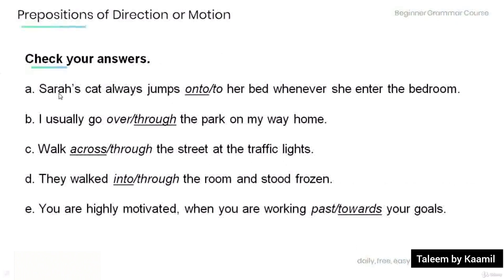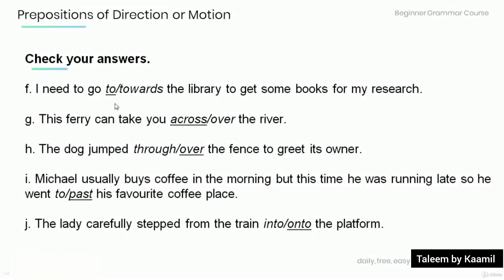Let's check your answers. a) Sarah's cat always jumps onto her bed whenever she enters the bedroom. b) I usually go through the park on my way home. c) Walk across the street at the traffic lights. d) They walked into the room and stood frozen. e) You are highly motivated when you are working towards your goals. f) I need to go to the library to get some books for my research. g) This ferry can take you across the river. h) The dog jumped over the fence to greet its owner. i) Michael usually buys coffee in the morning but this time he was running late so he went past his favorite coffee place. j) The lady carefully stepped from the train onto the platform.